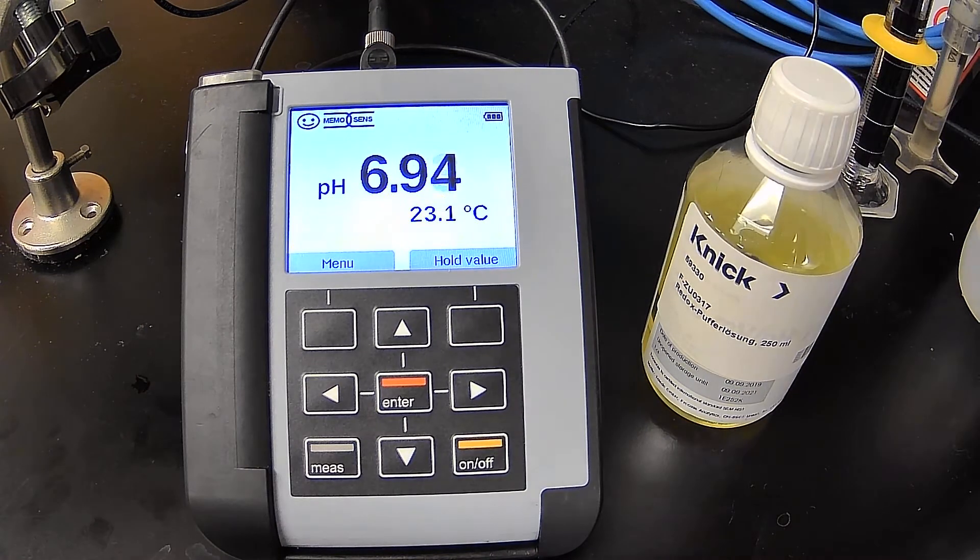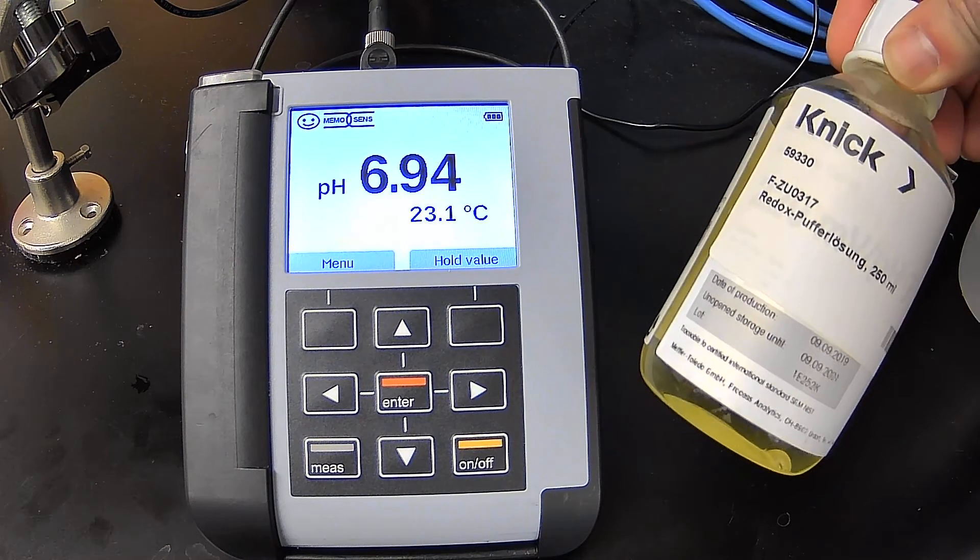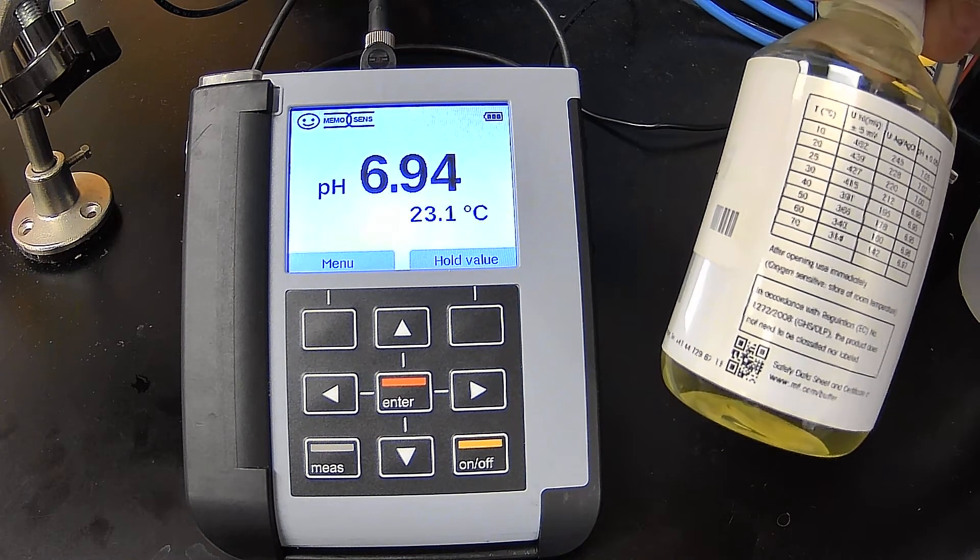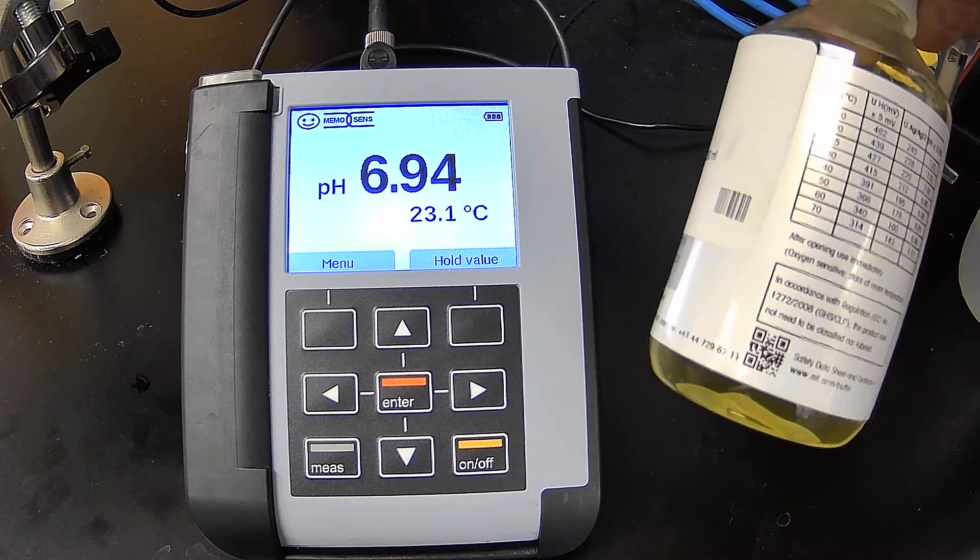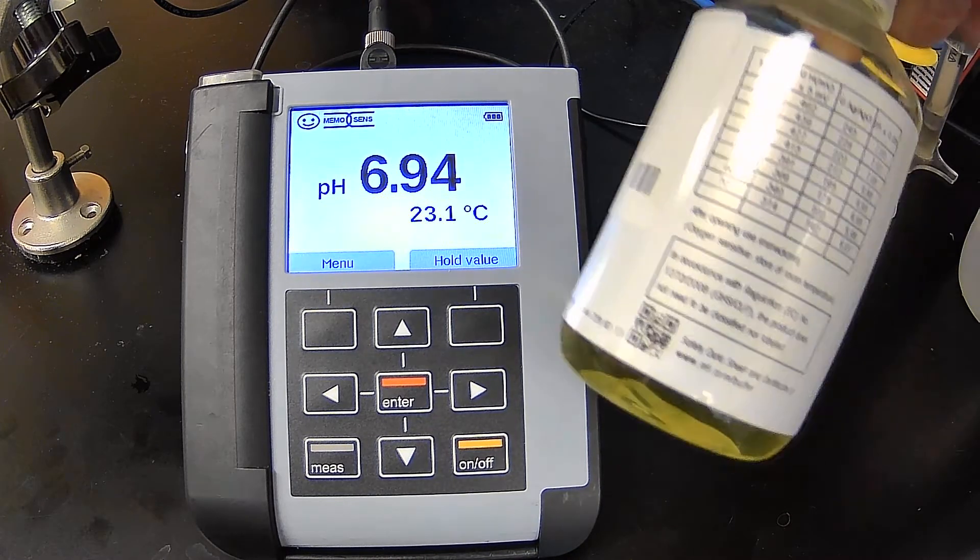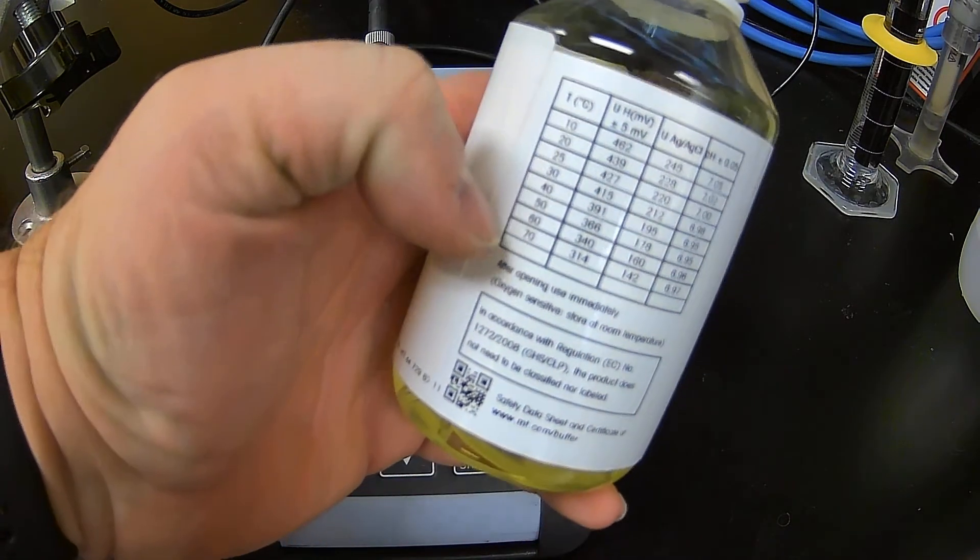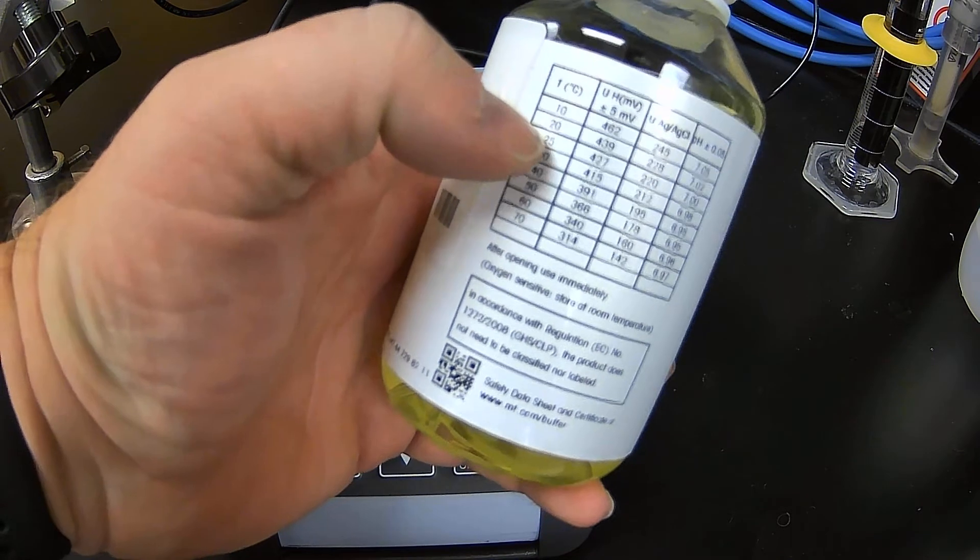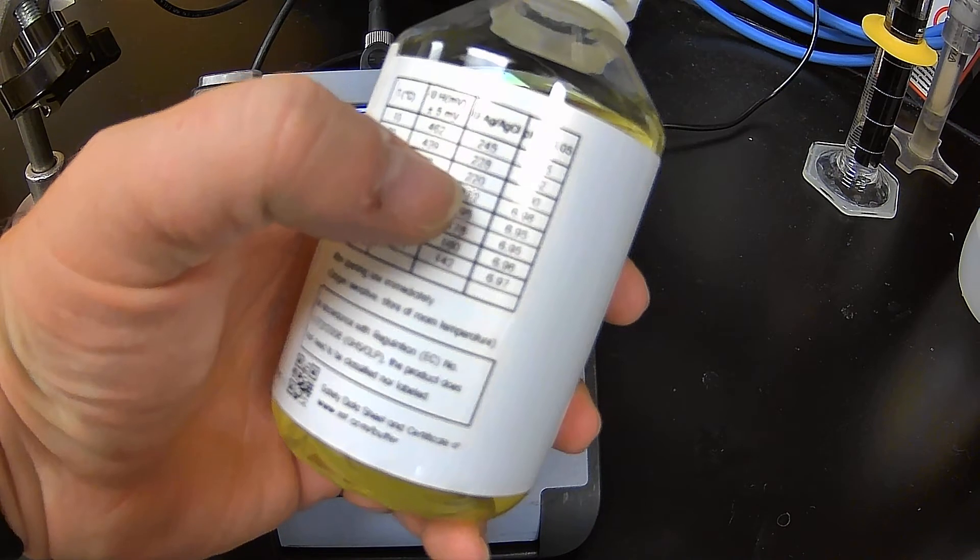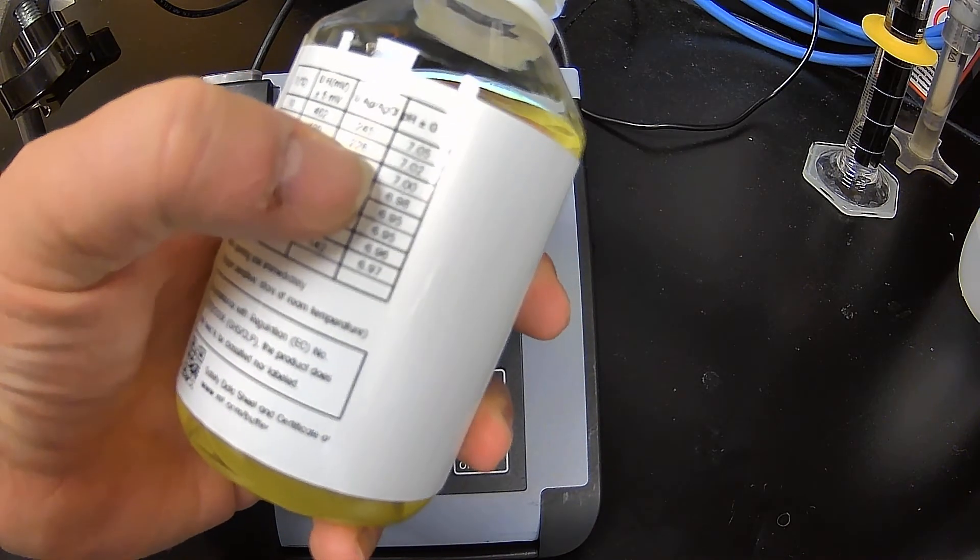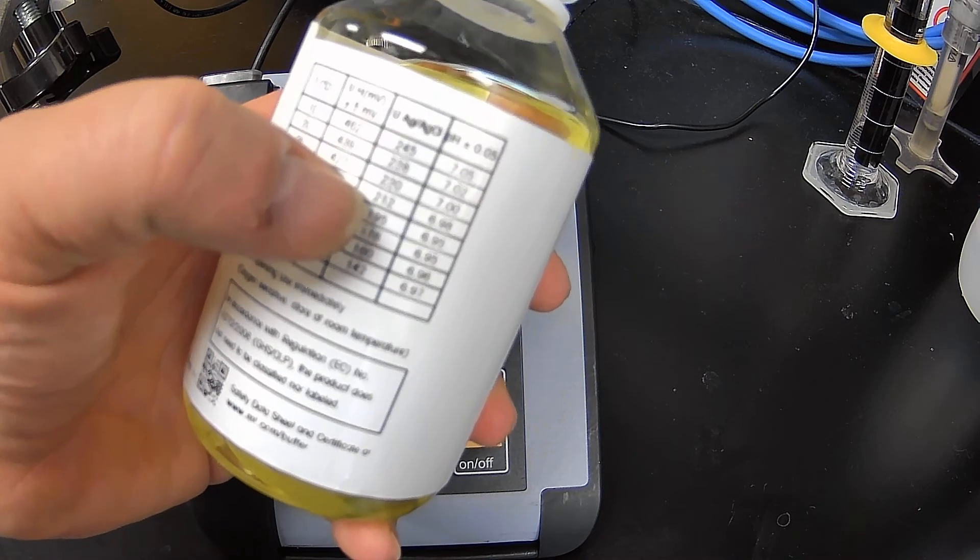Now, whenever you calibrate an ORP, you want to use a known standard so that you can get a proper calibration. In this case, we're using a 220 millivolt ORP standard at 25 degrees Celsius. Now I'm going to apologize because the glare is going to get in the way. But if you come to 25 degrees C, skip through this column just for a moment, come across the 220 millivolts at a pH of seven. And that's for silver silver chloride reference systems, which is exactly what we have here.